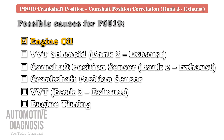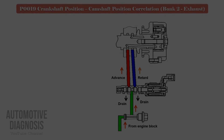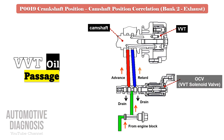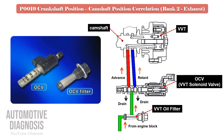Testing procedure for the bank 2 exhaust VVT solenoid valve. The VVT solenoid provides engine oil to the VVT in order to advance or retard the timing. Some engines have a separate VVT oil filter, but on many others the filter is installed on the solenoid. Locate the external filter, remove and clean it thoroughly.